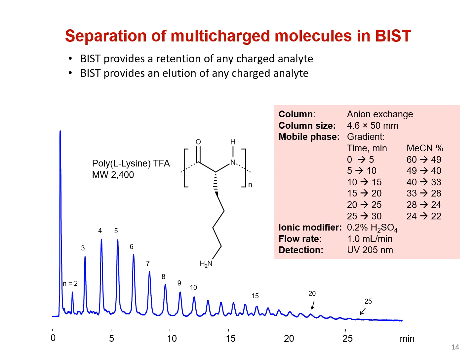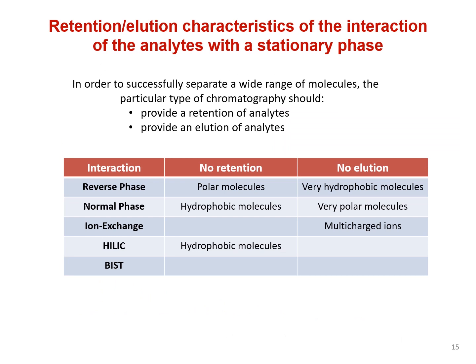Let's look at some interesting applications of BIST retention. Here we show polylysine, which is a high molecular weight charged compound that is commercially available as a food additive. It is produced as a mixture of oligomers of many different lengths. Typically, analysis of polylysines is done by size exclusion chromatography, but this method produces very little information about oligomer distribution. In contrast, with BIST, individual oligomers can be resolved up to 25 lysine units. Elution is observed for any number of charges in the molecule if the concentration of water is high enough. We already know that the more charges a given analyte has, the more it will retain with BIST.